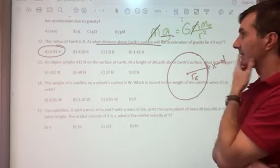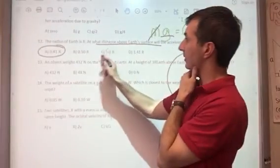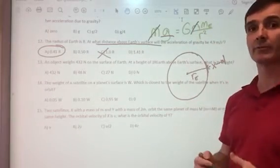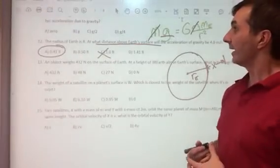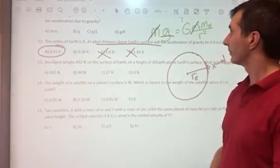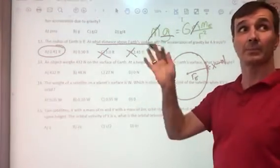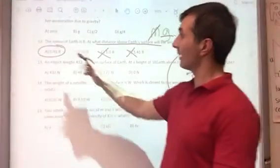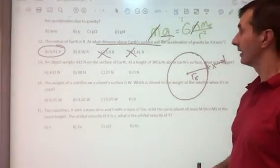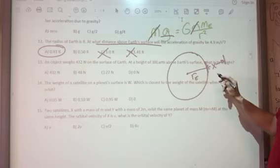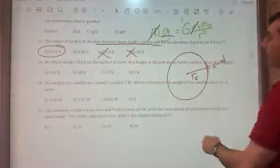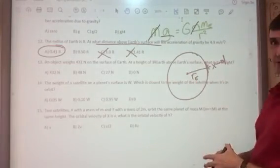We can eliminate some answers. At twice the distance we'd have one-fourth of the normal gravity, which also eliminates this one because the further we go out, it'd be even smaller. Now we're down to a 50-50 chance. We're dealing with the square root issue.